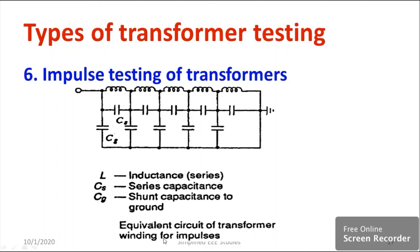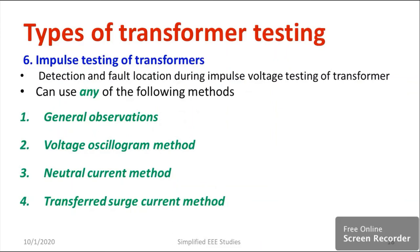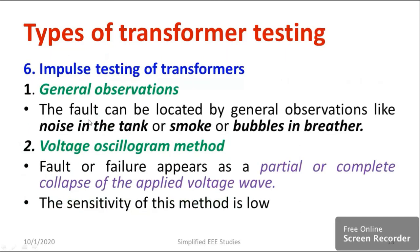These are the equivalent circuit components of the transformer winding for impulse testing. There are different procedures for conducting impulse testing, and an impulse generator is mandatory. The checklist of various procedures includes: number one, general observation; number two, voltage oscillogram method; number three, neutral current method; and finally, transfer surge current method.